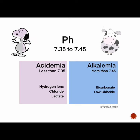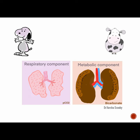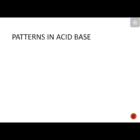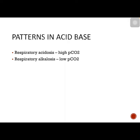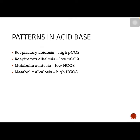Major contributing factors to metabolic acidosis are higher concentrations of hydrogen ion, chloride, and lactate. Major contributing factors for alkalemia are higher bicarbonate levels and low chloride levels. In an acid-base report, analytes are broadly divided into respiratory and metabolic components. pCO2 is a respiratory component, as we expire carbon dioxide via the lungs. Bicarbonate is a metabolic component, as the kidneys either excrete or reabsorb bicarbonate based on need. High pCO2 causes respiratory acidosis; low pCO2 leads to respiratory alkalosis. Low bicarbonate causes metabolic acidosis; high bicarbonate leads to metabolic alkalosis.